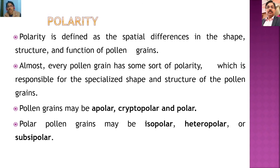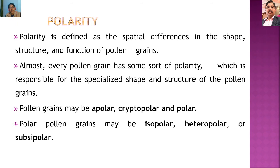Almost every pollen grain has some sort of polarity, which is responsible for the specialized shape and structure of the pollen grain. According to polarity, pollen grains may be apolar, cryptopolar, or polar. Apolar pollen grains don't have polarity. Cryptopolar grains appear apolar at first but close examination reveals polarity. Polar pollen grains have clear, distinguished polarity.